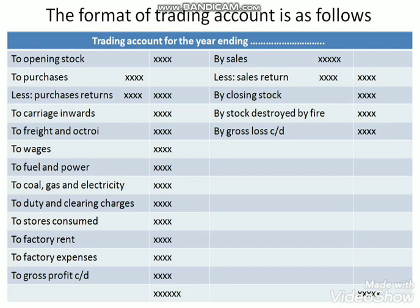The next item is purchases, including both cash purchases and credit purchases, which appear on the debit side of the trial balance. In case of purchase returns or return outwards, these are deducted from purchases in the outer column, and purchase returns appear on the credit side of the trial balance.